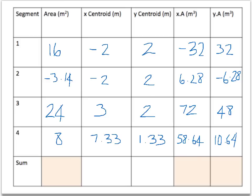So once we have these columns filled out, we need to sum the area columns. We're going to get 44.86. We need to sum the XA and the YA columns. So the XA columns are going to get 104.92, and the YA we're going to get 84.36.